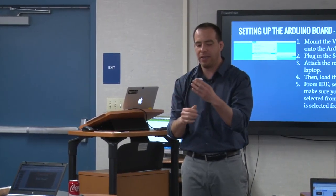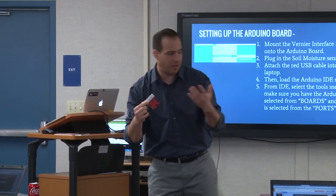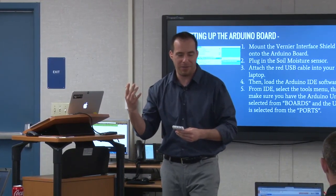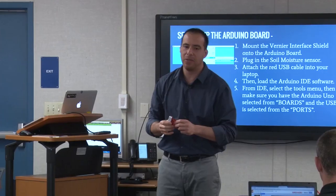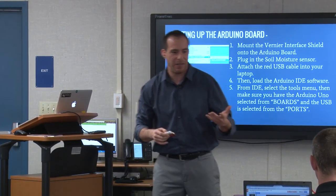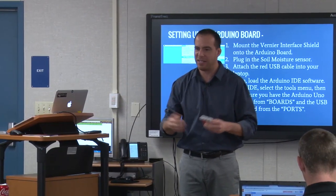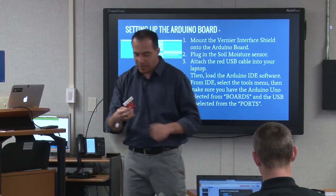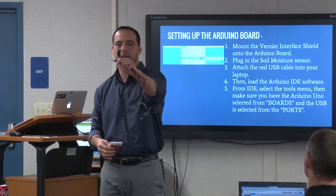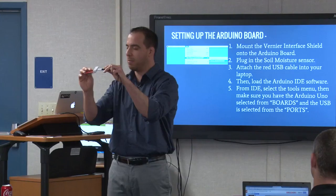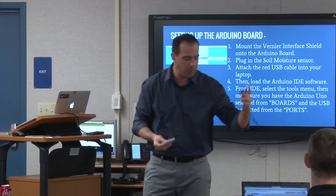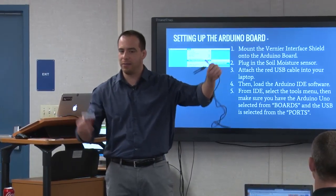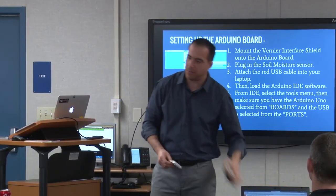This shield is from Vernier. Vernier is a scientific technologies company — they build scales, microscopes, and different types of sensors. If you're in a high school or middle school environment, you'll hear the name Vernier because it's the standard when it comes to high-quality sensors and scientific equipment. Vernier creates many types of sensors with a special plug that mounts right into the shield, so we can go into their catalogs and buy all the different sensor types we're interested in for data collection.